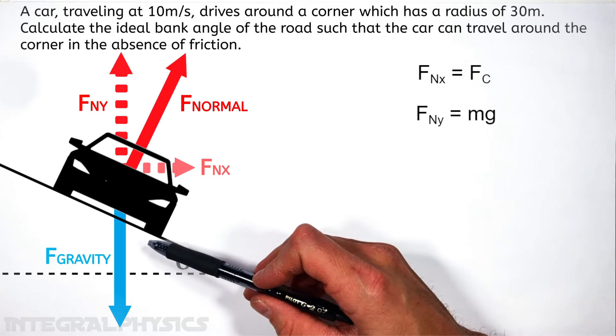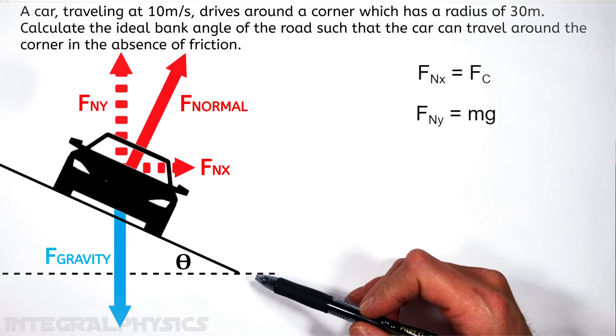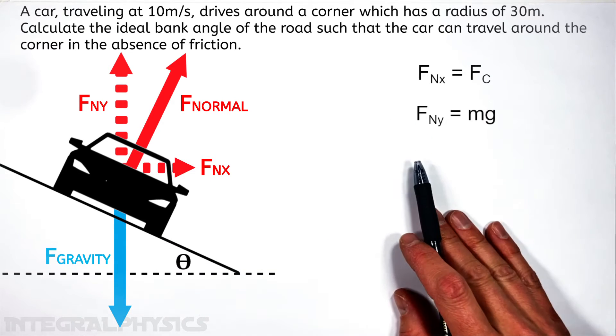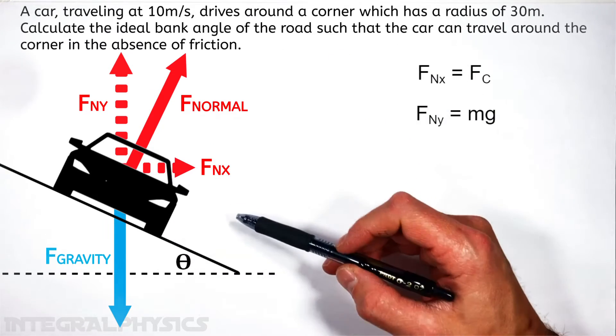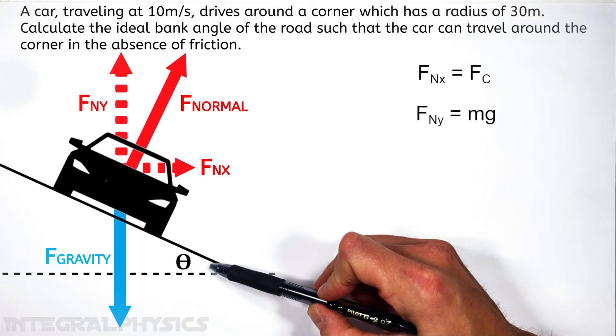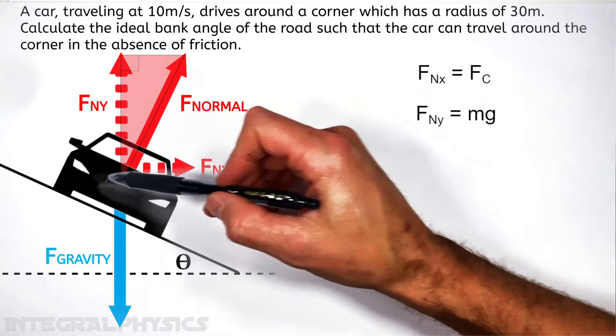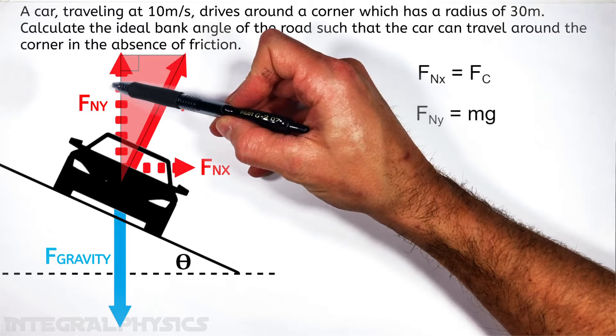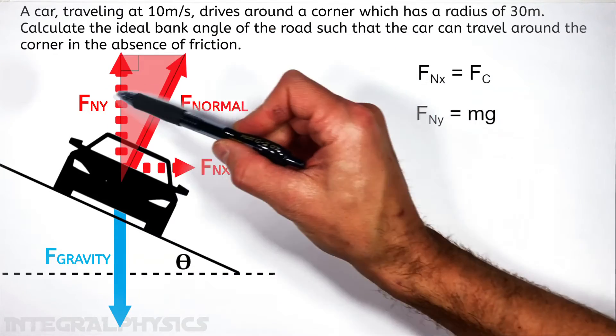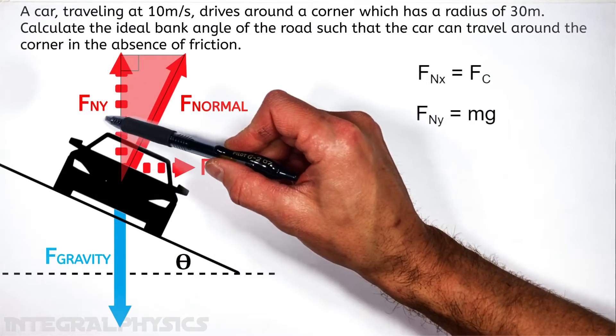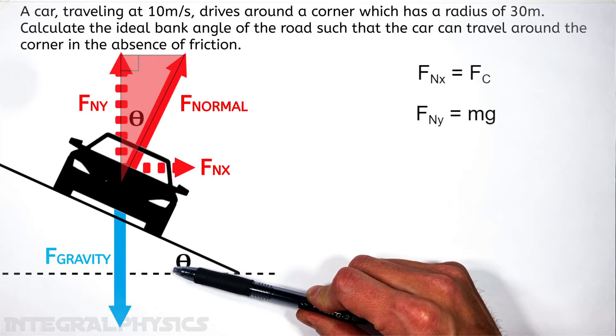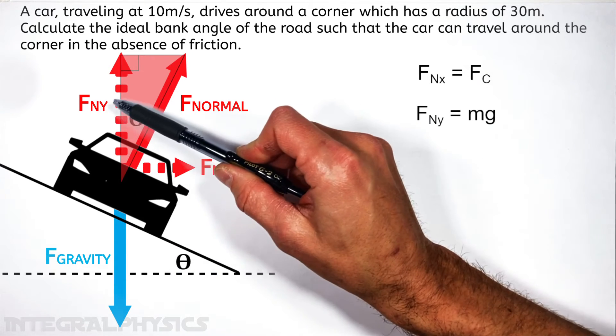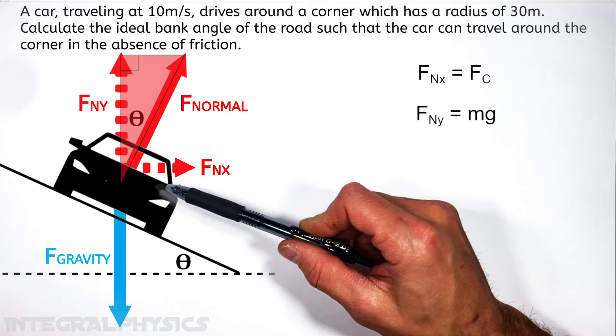Now remember, we're trying to tie this all back to the angle of the road. So rather than talking about Fnx and Fny, I want to relate the actual normal force to the bank angle of the road. If you look at this as a right triangle, Fny is the adjacent side of this right triangle where this interior angle is the same as the bank angle of the road. And this opposite side is the horizontal component of Fn.